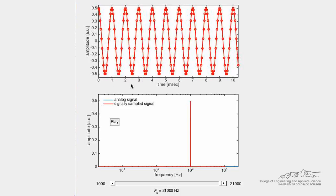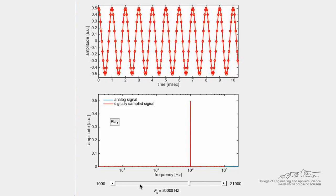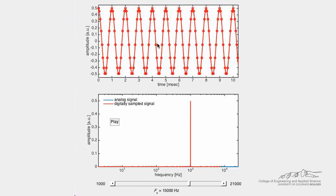This demo shows the effect of aliasing. An analog signal in blue is generated and sampled at a sampling frequency of Fs, which we can control with the slider bar. The digital representation of the analog signal is shown in red.